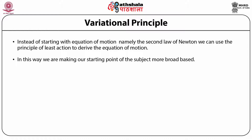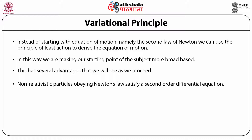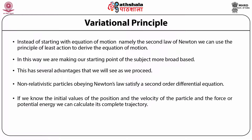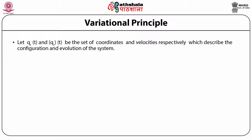We are making our starting point somewhat more broad-based, which has several advantages. We know that Newton's equations, obeyed by non-relativistic particles, satisfy a second-order differential equation. If we know the initial values of the position and velocity of the particle and the force or potential energy, we can calculate the complete trajectory. If qr and qr-dot denote the coordinate and the velocity respectively, then the position and velocity describe the configuration of the system, and their variation with time gives us the evolution of the system.